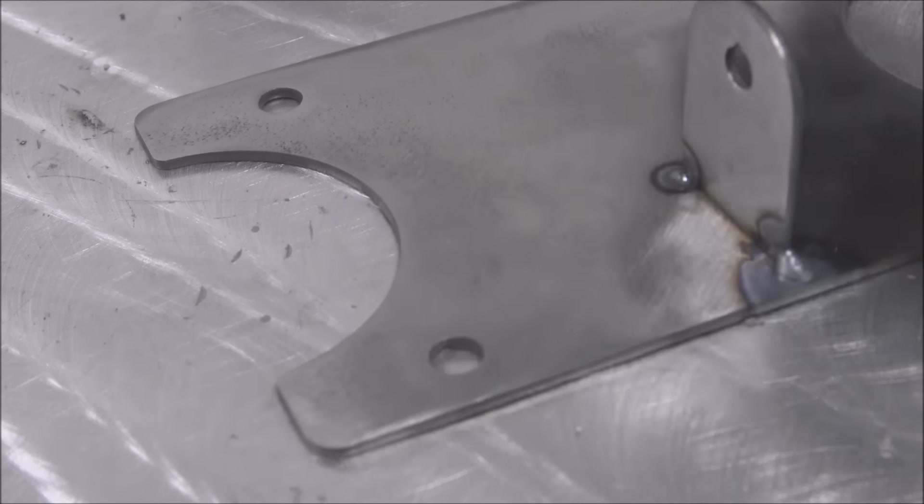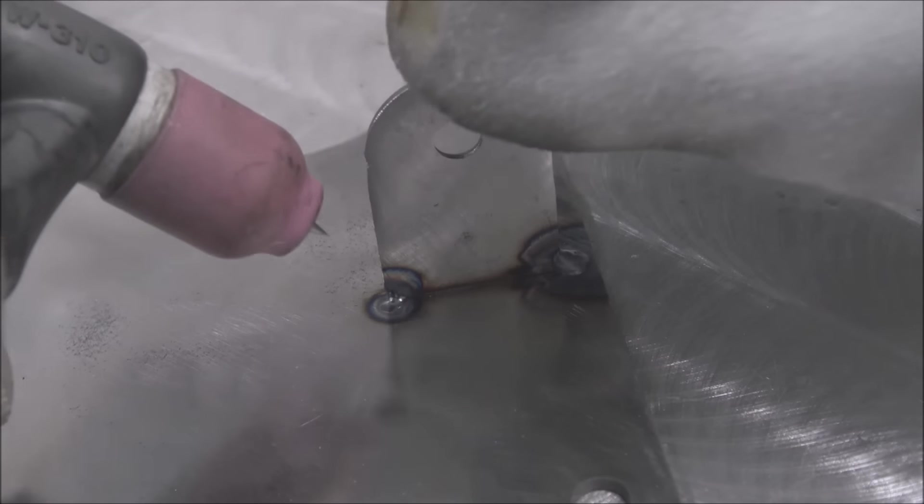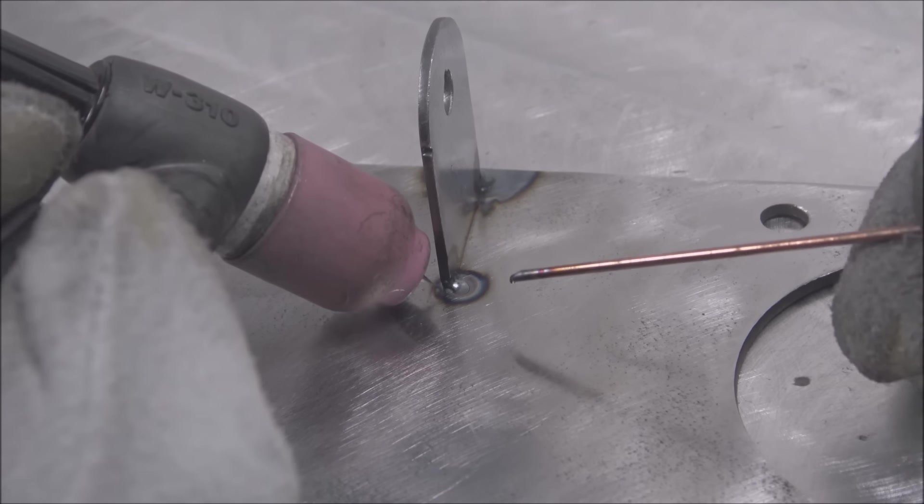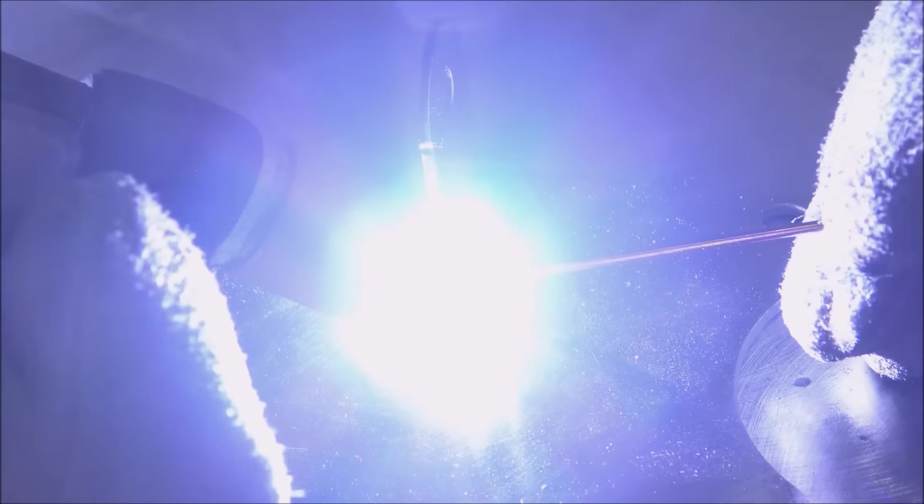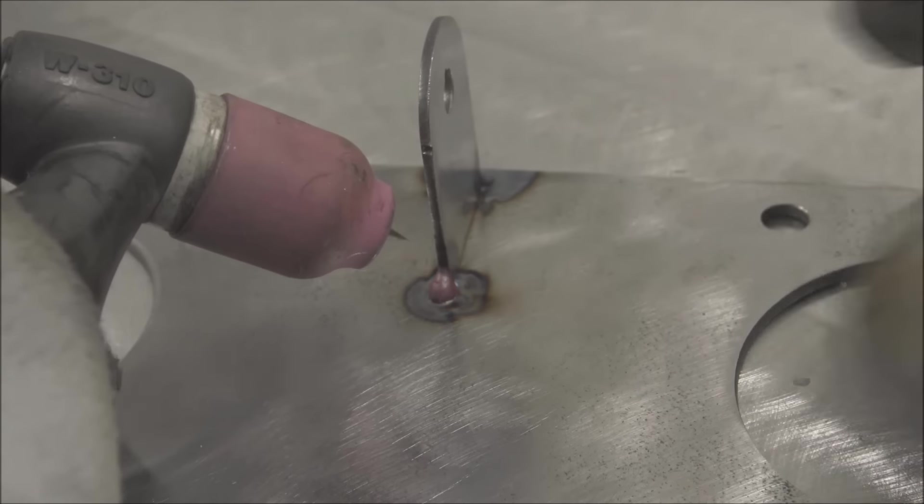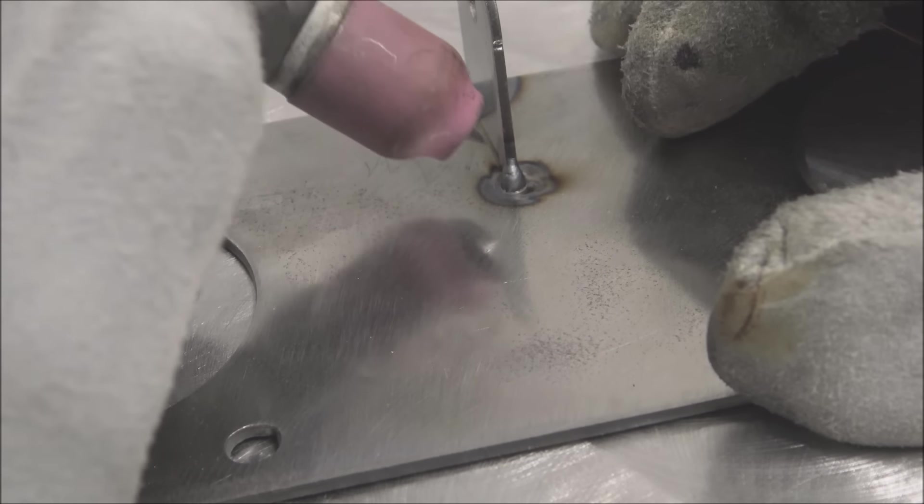So now I have that to run my weld into and same for the other side so I can put a big gob right here and run this weld into that.